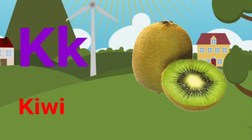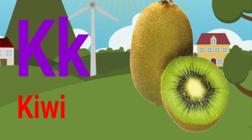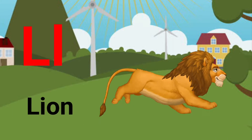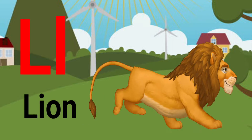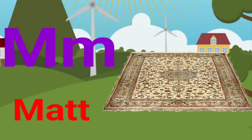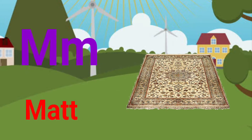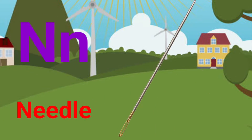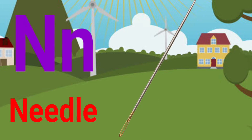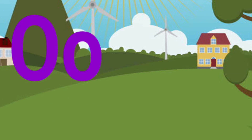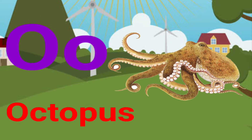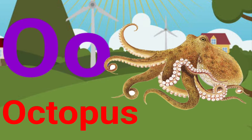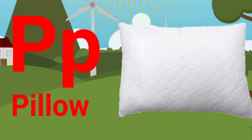K for kiwi, L for loin, M for mat, N for needle, O for octopus, P for pillow.